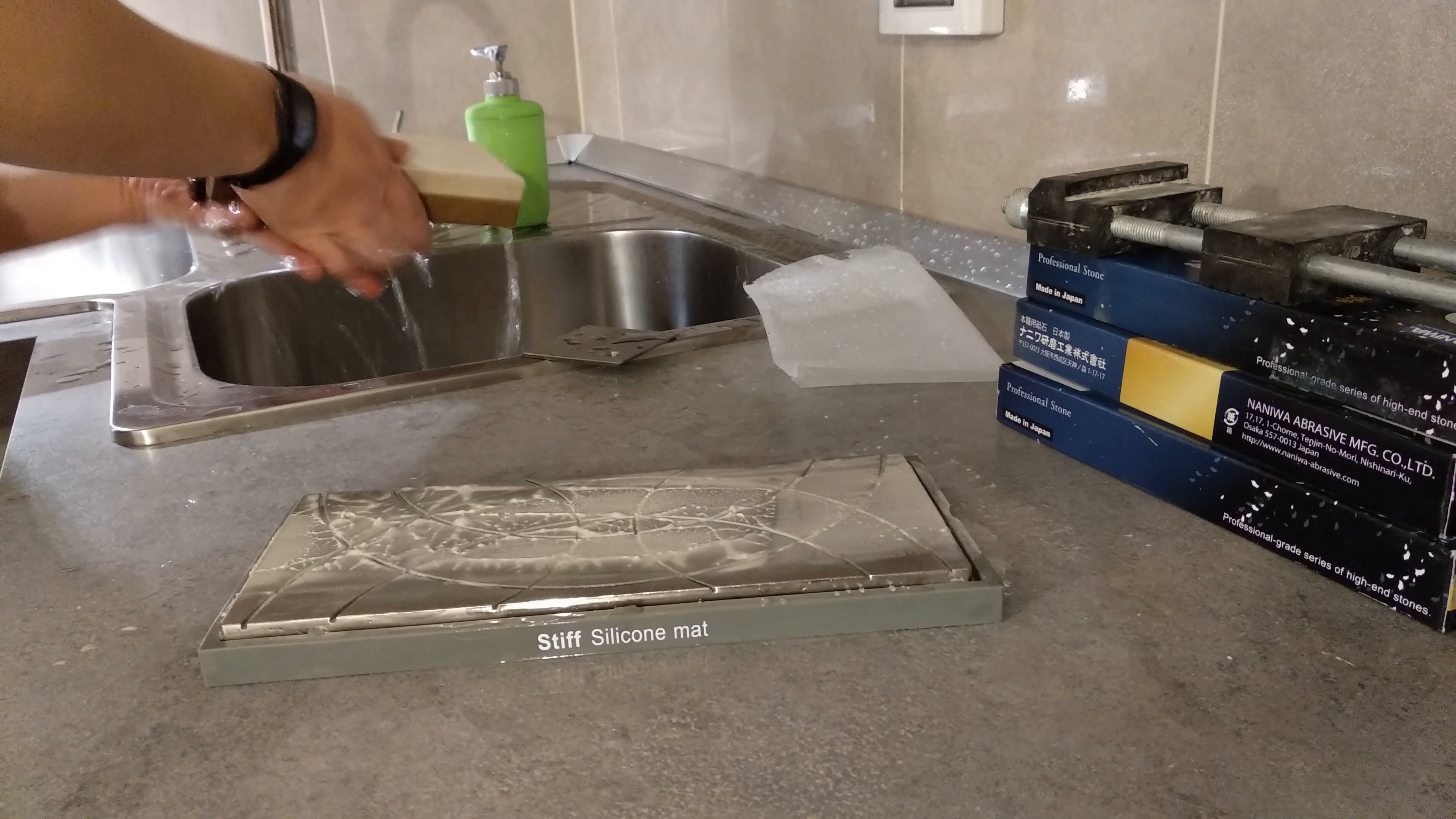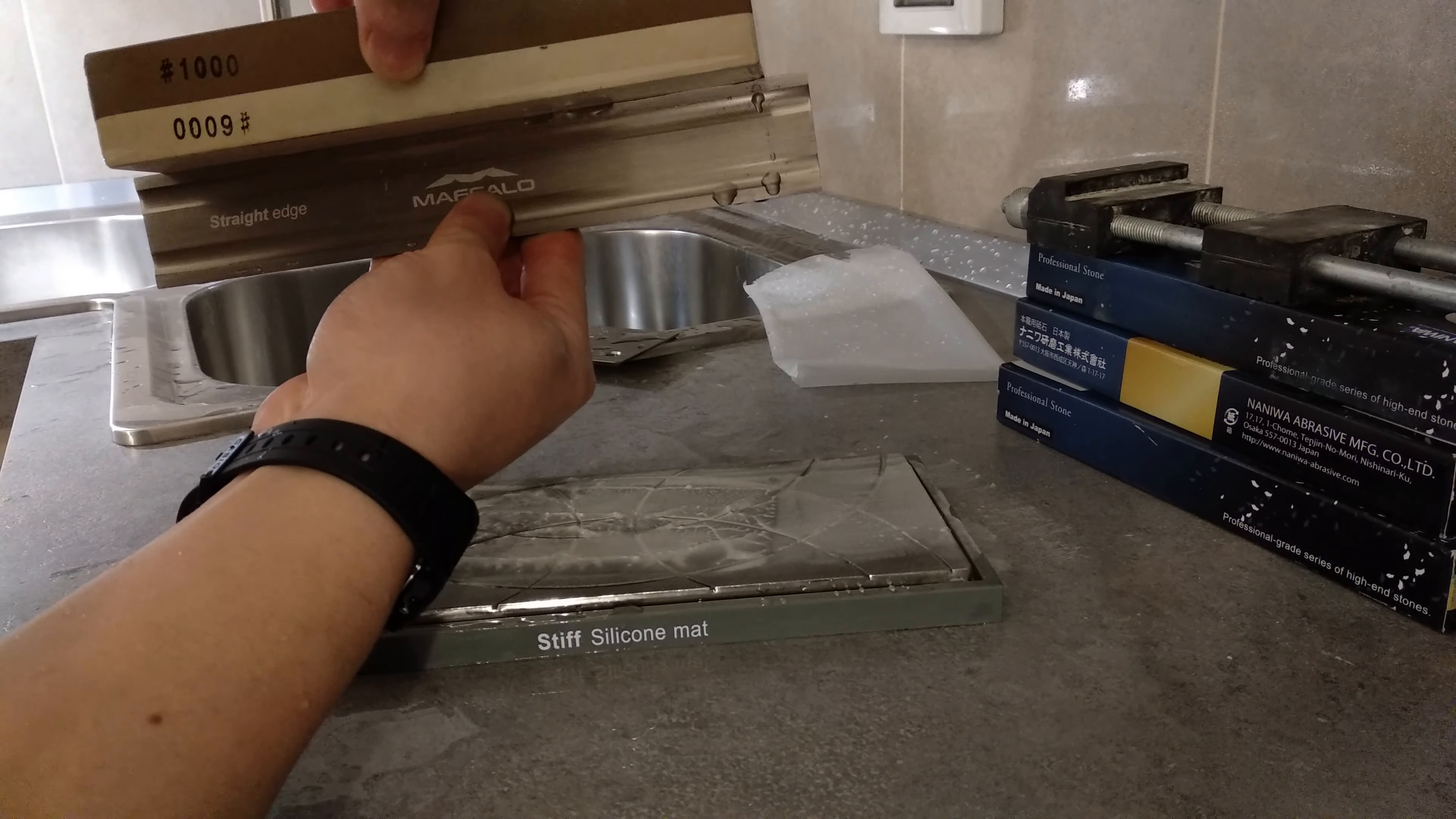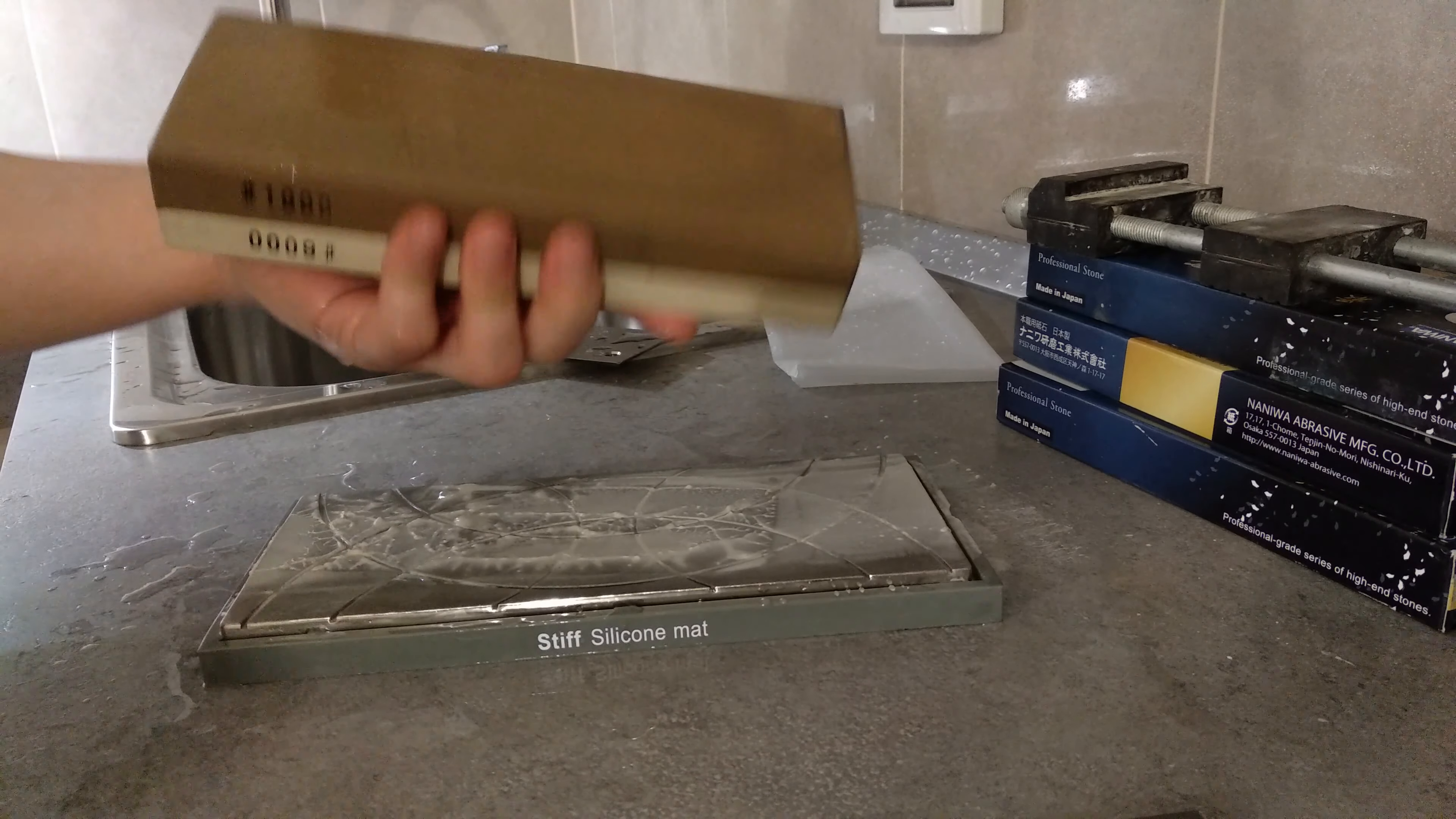You wash it, and then with the Mahalo straight edge you check the straightness. You can see through the lights. From the lights you can see if there's any spot that's lower or high. There's no light coming out from the other side, so you're good to go. This is really, really flat. I'll do the same with the 1000 side, 1000 grit.